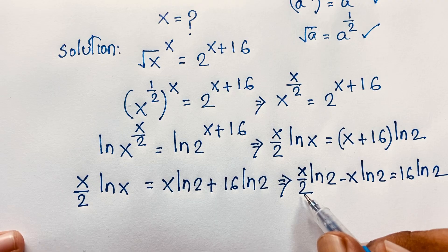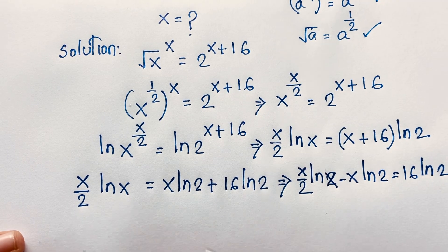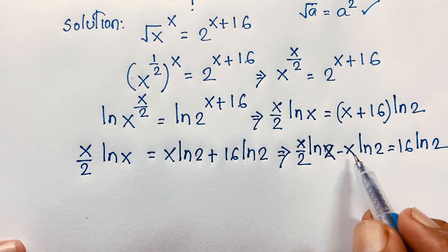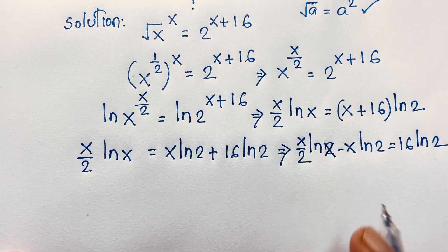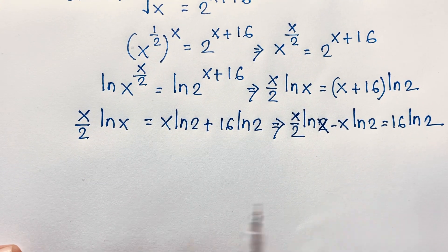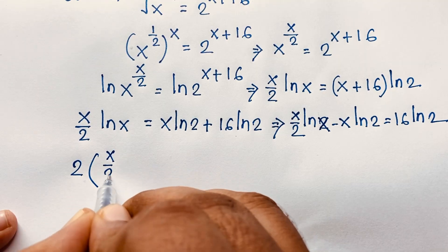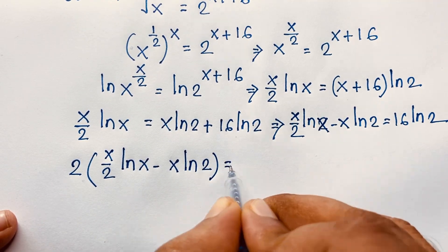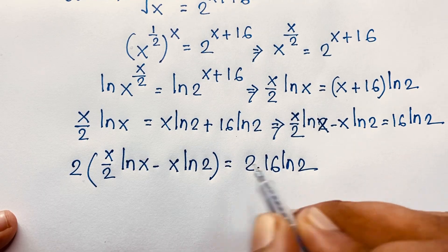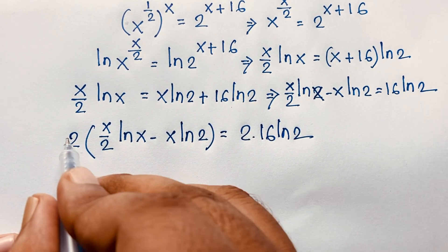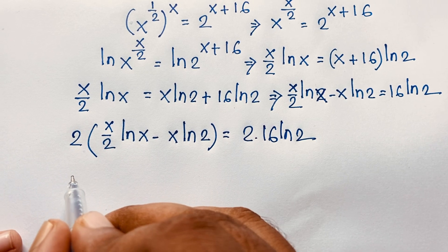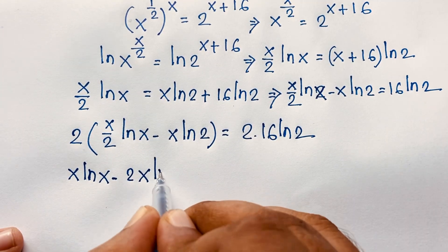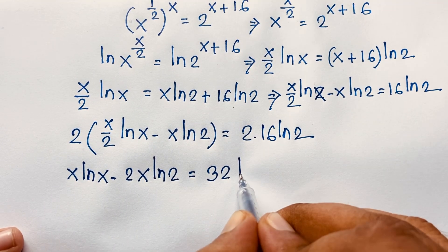I just move this term to this side. Here is x. Now, you can see: x over 2 ln x and x ln 2. I multiply both sides by 2, so 2 times x over 2 ln x minus x ln 2 equals 2 times 16 ln 2. These 2s cancel out, giving us x ln x minus 2x ln 2 is equal to 32 ln 2.